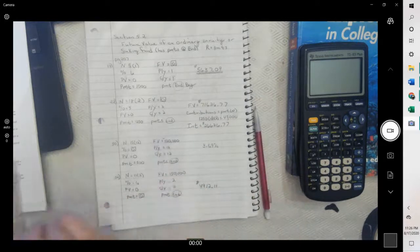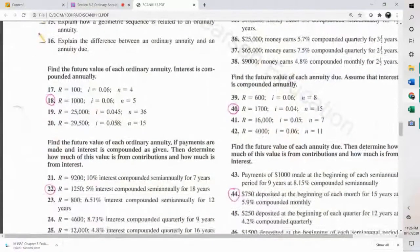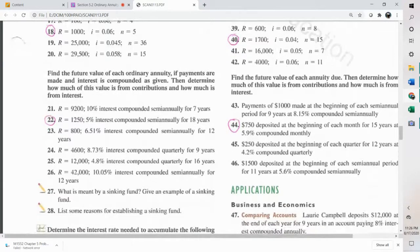And we're at 22. Find the future value. So we put a zero in future value. If the payments are made and interest is compounded as given, then determine how much of this value is from contribution and how much is from interest. So we have $1,250, which would be our payments.